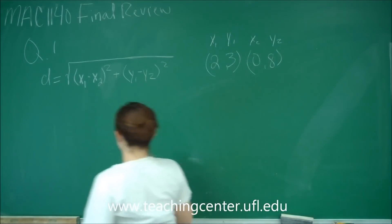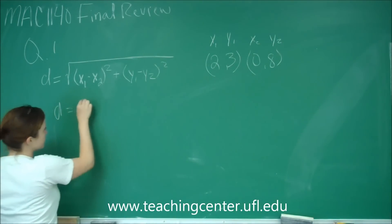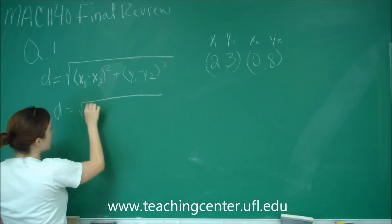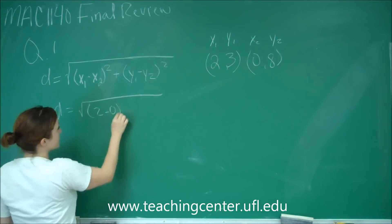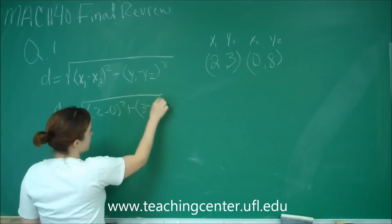And then you stick with it. So for us, we'll get d is equal to the square root of 2 minus 0 squared plus the square root of 3 minus 8 squared.